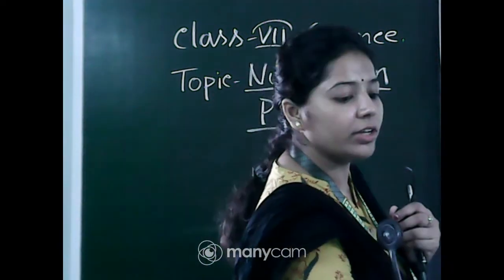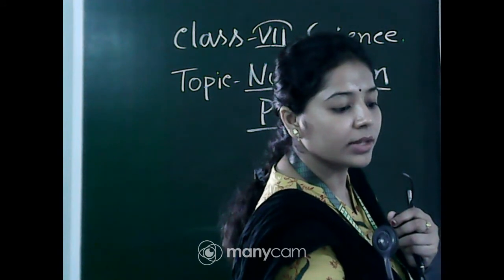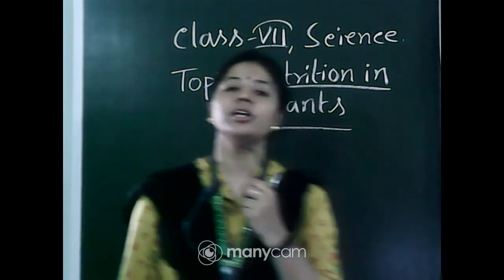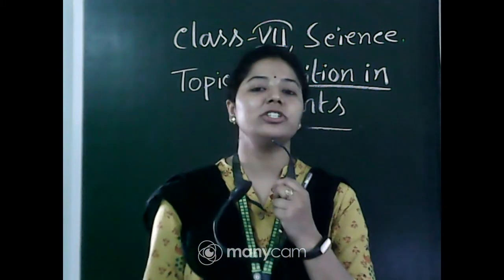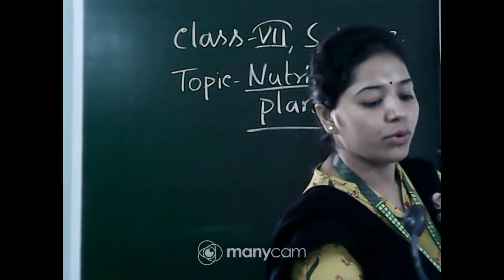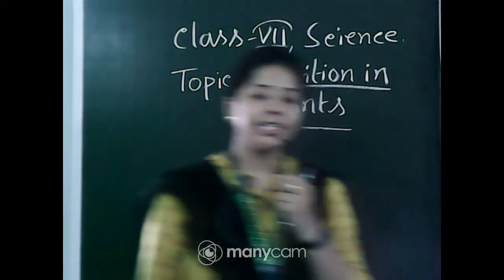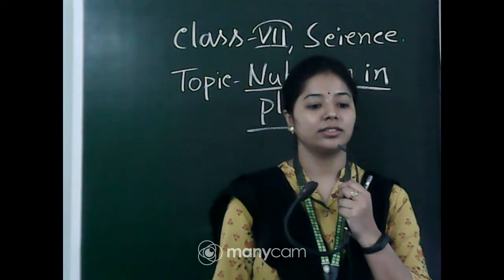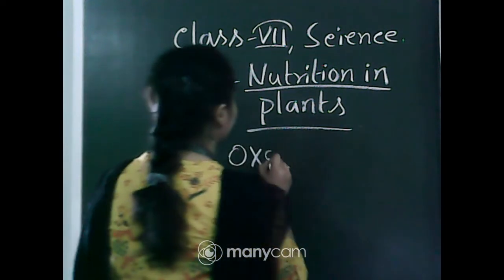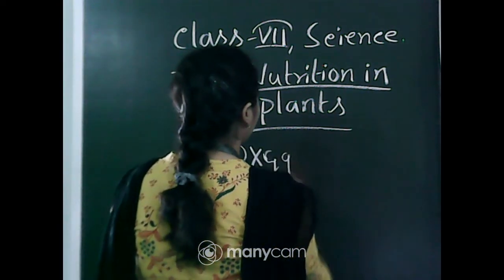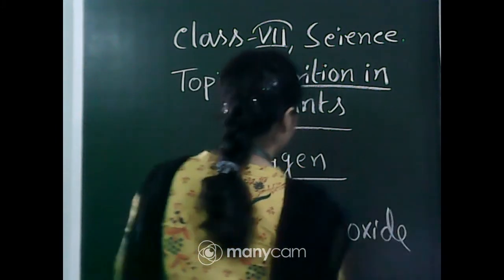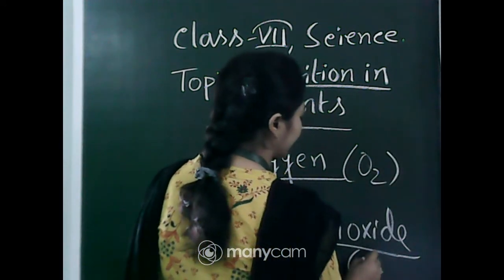Next question: Dash is produced and dash is utilized during photosynthesis. You have to mention it in gaseous form. The first answer is oxygen — oxygen is produced. A large amount of oxygen is produced, and carbon dioxide is utilized. O2 is the chemical formula for oxygen and CO2 for carbon dioxide.